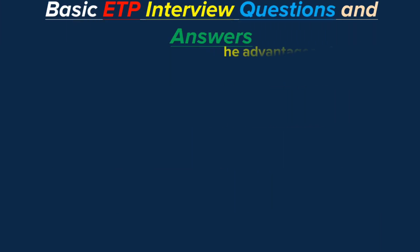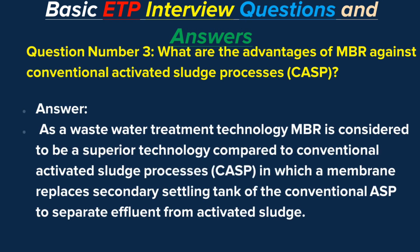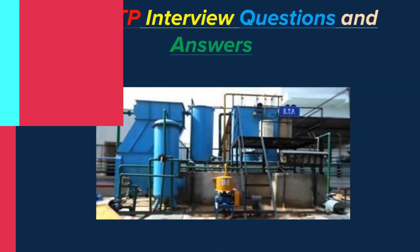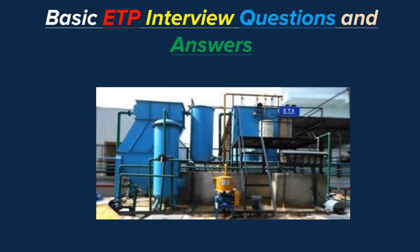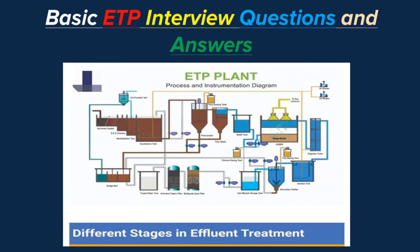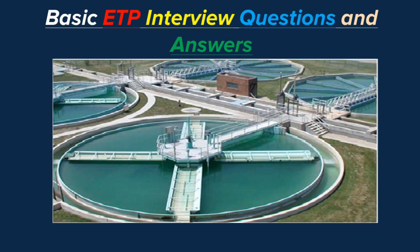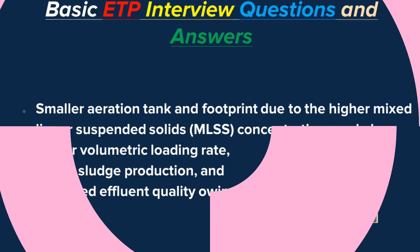Question number 3: What are the advantages of MBR against conventional activated sludge processes (CASP)? Answer. As a wastewater treatment technology, MBR is considered a superior technology compared to conventional activated sludge processes (CASP), in which a membrane replaces the secondary settling tank of the conventional ASP to separate effluent from activated sludge.